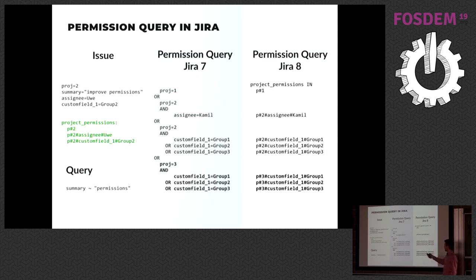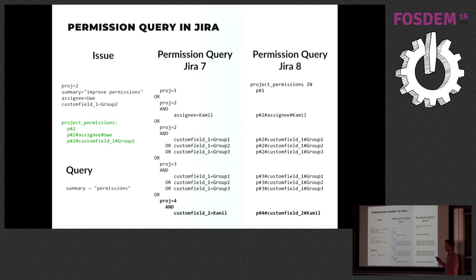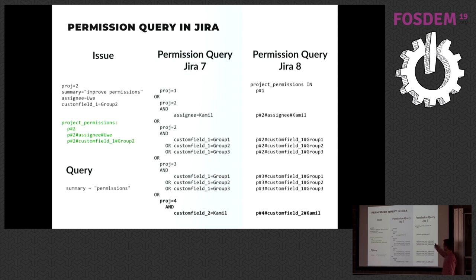This might look complicated, but it's a rather simple query — four projects, member of three groups. Imagine in real life: a thousand projects and membership in 50 groups. The boolean query would become huge, and Lucene had to evaluate all those ANDs and ORs against every issue, which was slow. The two approaches may look similar in size, but the TermInSet query is much easier to evaluate — it's just a set of terms, and you need to find one common value between the query and the indexed field. As soon as you find one match, you're done.